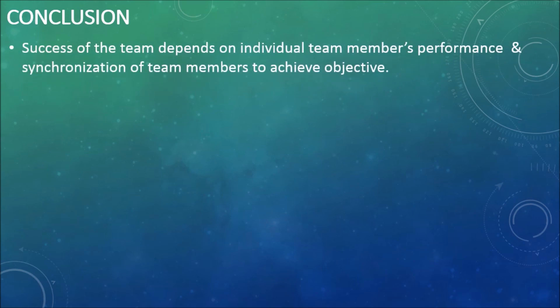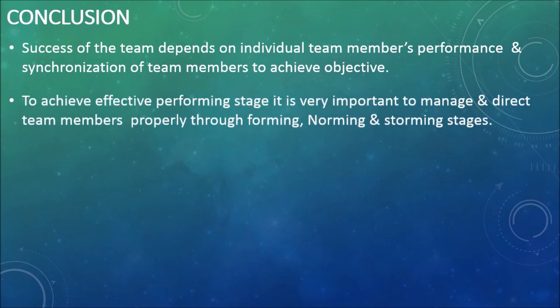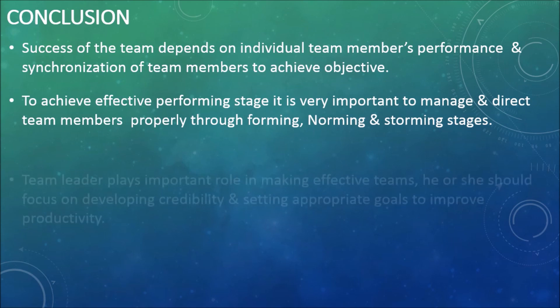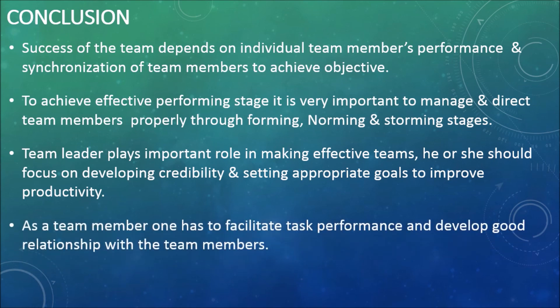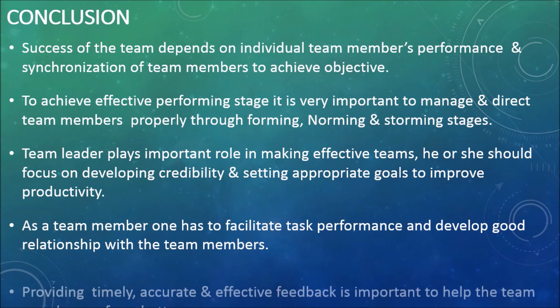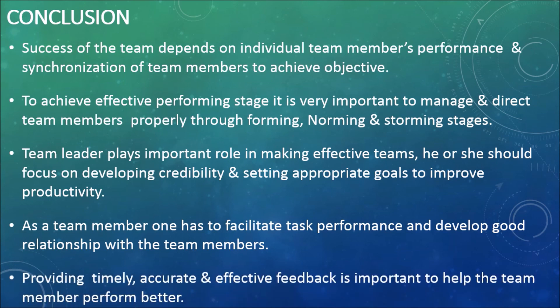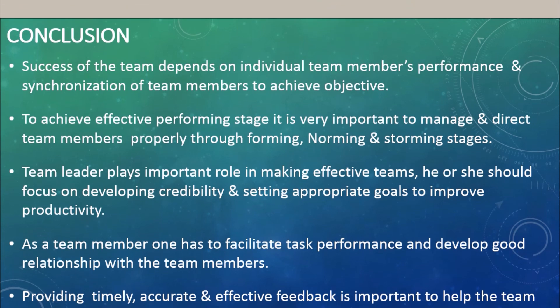Conclusion. The success of a team depends on individual team members' performance and synchronization to achieve objectives. To achieve the effective performing stage, it is very important to manage and direct team members properly through the forming, norming, and storming stages. The team leader plays an important role in making effective teams, focusing on developing credibility and setting appropriate goals. As a team member, one must facilitate task performance, develop good relationships, and provide timely, accurate, and effective feedback to help team members perform better.